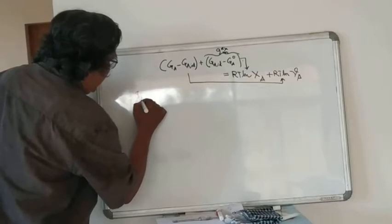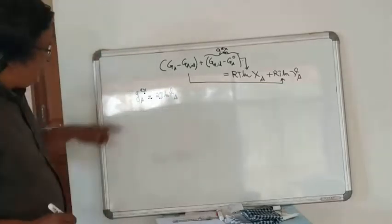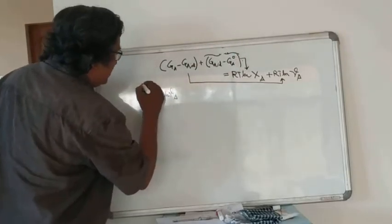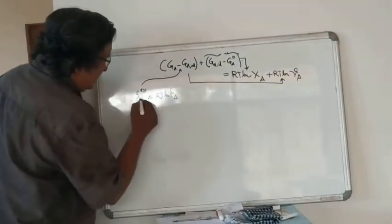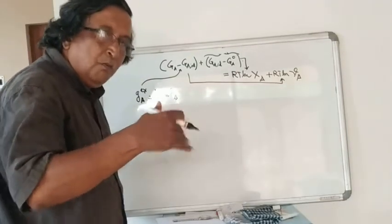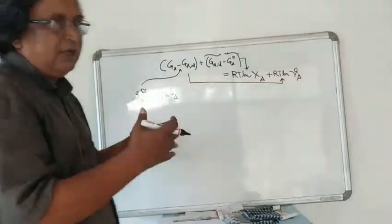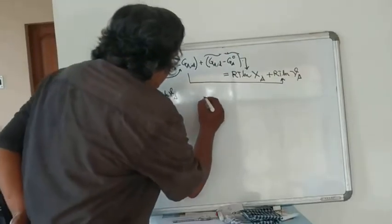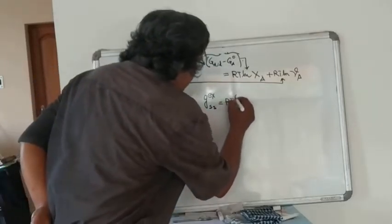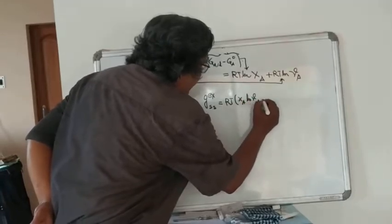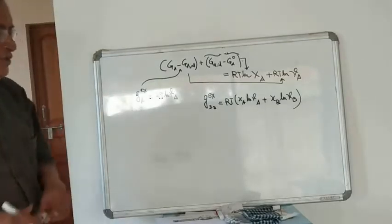G_A excess mixing equals RT·ln(γ). But G excess mixing — this is nothing but the excess mixing term, which we term as excess mixing, meaning more than non-ideal mixing. This is taken to be RT·ln(γ_A). So by analogy of the equations, we can now write G excess mixing of the solid solution as essentially RT times (XA·ln(γA) plus XB·ln(γB)).